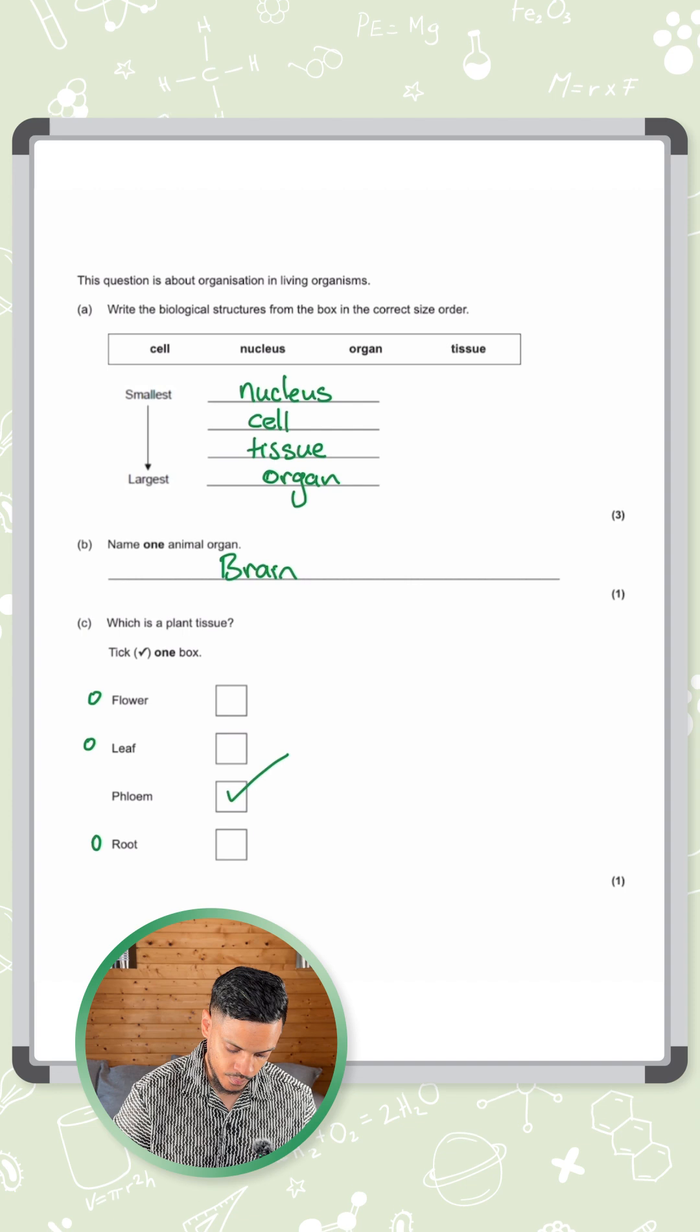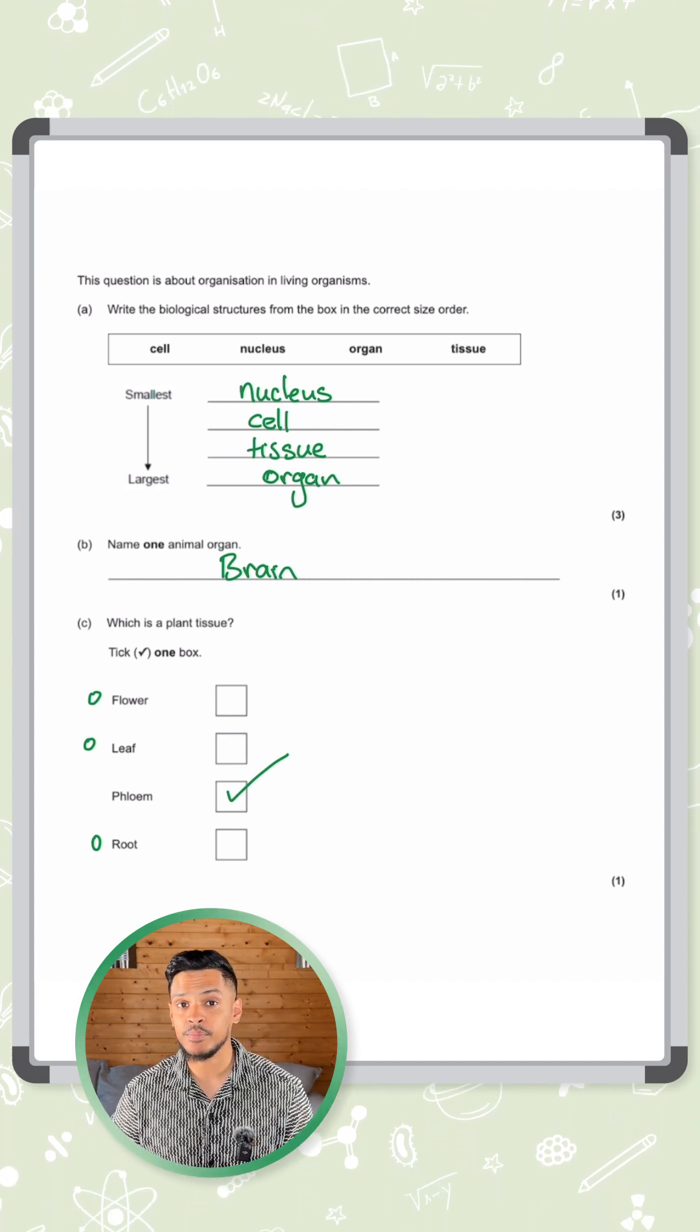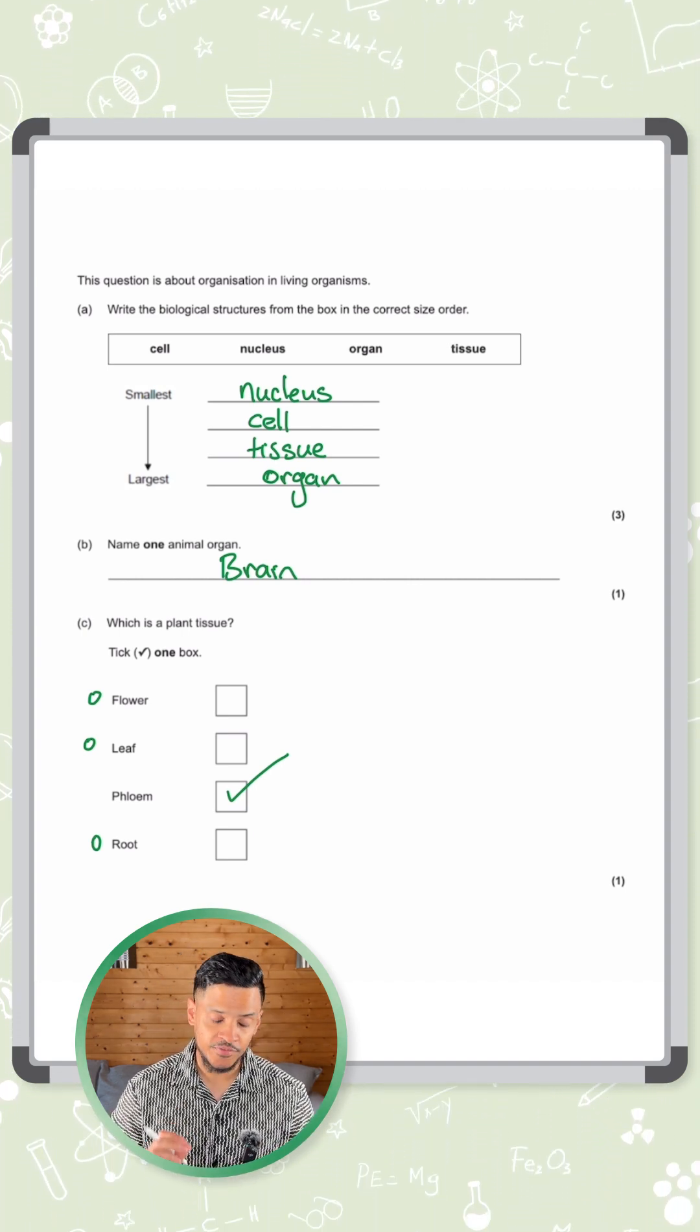The answer is the phloem. So there's six different plant tissues you need to know about. Phloem is one of them.